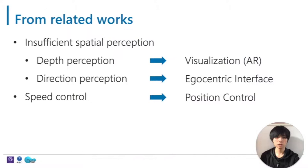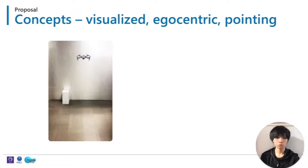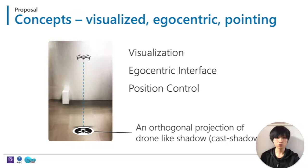To solve these issues, we searched some related work. We found that we can visualize the drone via AR, design the interface as an eccentric interface, which is very intuitive, and use a position control method to respond to accurate and easy drone operation requirements. Inspired by real-world observations, we found that a caster shadow seems to solve all those issues. If we control the drone through this caster shadow, it becomes an eccentric interface, and we can control the drone's position directly, while also improving depth perception.